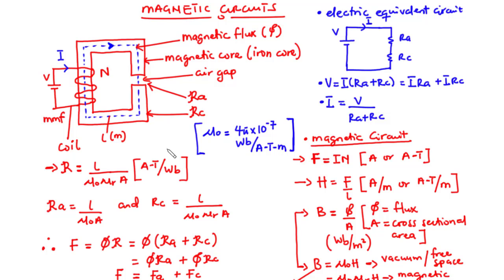Given this magnetic circuit, the magnetomotive force — or MMF — that drives magnetic flux within the circuit is given by F, which equals the current in the core times the number of turns of the coil. That is measured in ampere-turns.